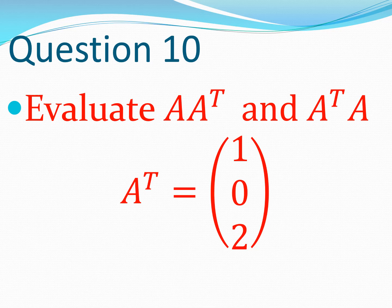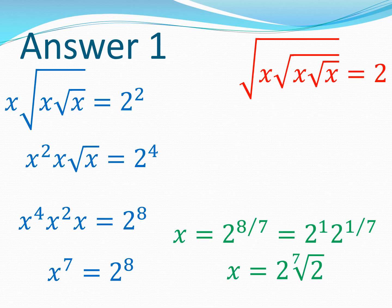Finally, question ten asks you to calculate AAT and ATA where A is a matrix and A-transpose is given as a column vector 1, 0, 2. Now you can try to solve these questions and then look at the solutions in the second part of this video. So let's start with problem one. Questions will be given in red, working in blue, and the final answer in green — that's going to help you figure out what's going on. We start with this question and you can see that there are three roots, all square roots.